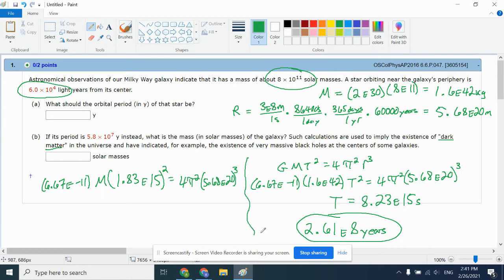All right, so I'm going to go ahead and do 4 times pi squared times 5.68E20 cubed. Now divide it by 6.67E-11, and then divide it by 1.83E15 squared. And I find the mass turns out to be 3.24E43 kilograms. Now the final step to figure out how many solar masses, I'm going to divide that by 2E30 because the mass of the sun is 2E30. I end up with 1.62E13 solar masses. And that kind of concludes 1.